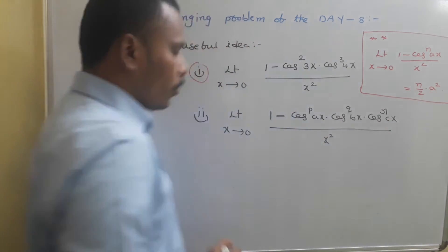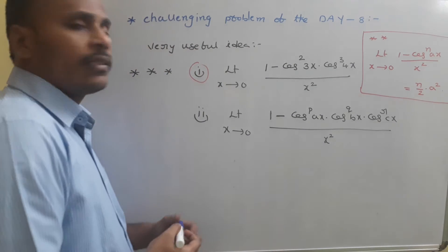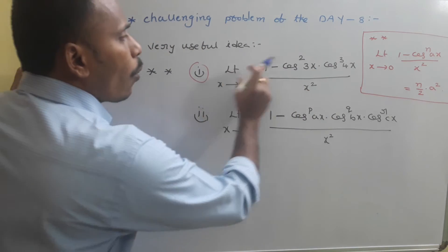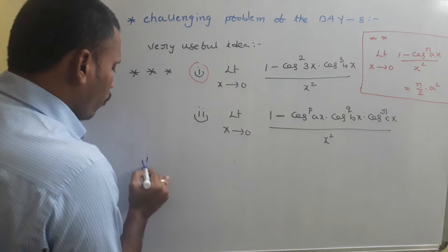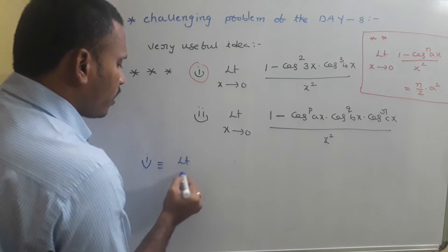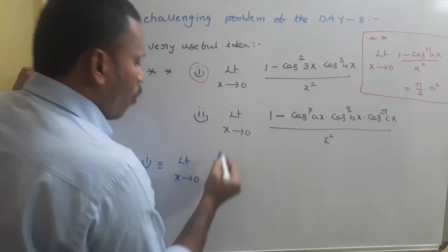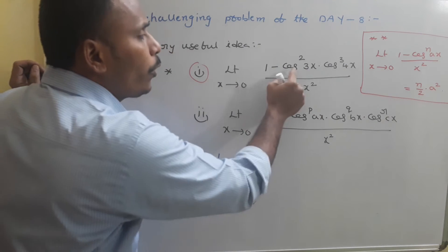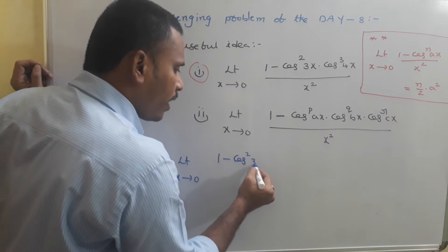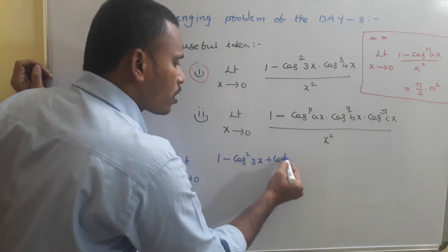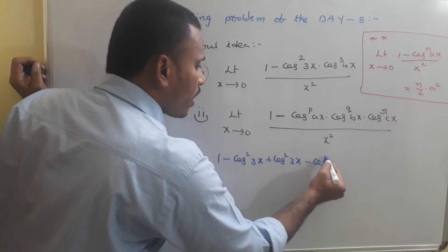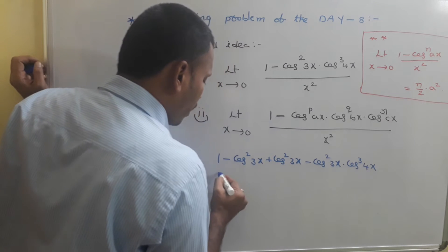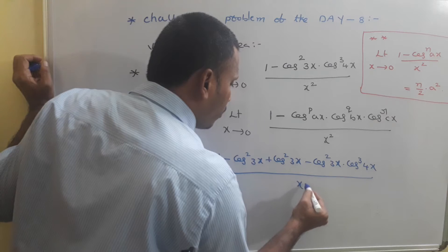I am going to solve the first one and then generalize to the second using the same idea. For limit as x tends to zero of (1 - cos²(3x)·cos³(4x)) / x², I am going to add and subtract cos²(3x) in the numerator: 1 - cos²(3x) + cos²(3x) - cos²(3x)·cos³(4x), all divided by x².